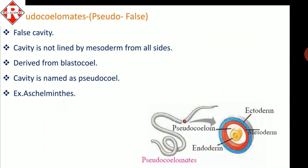The third group is pseudocoelomates. The word 'pseudo' means false — a cavity is present but it is a false cavity. It is called false because the cavity is not lined by mesodermal cells from all sides. This cavity is derived from the blastocoel rather than from mesodermal cells, and is thus known as a pseudocoelom. An example of pseudocoelomates is phylum Aschelminthes.